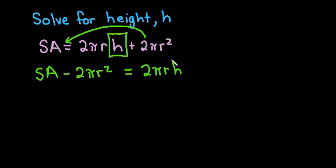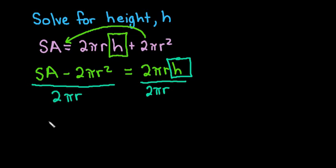Now again our goal is to get h by itself, so what we want to do is divide by everything that's not attached to it, so I'm going to divide 2 pi r on both sides. On the left-hand side I am going to put it under everything, and there are two ways that you could write this answer.